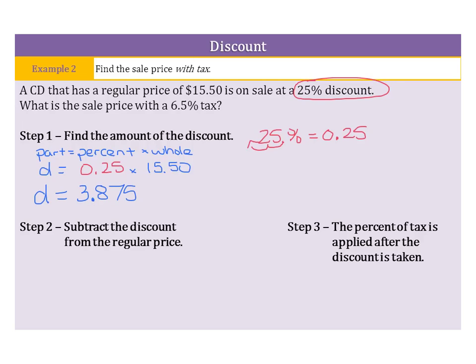Now, we want to subtract the discount from the regular price. So, our regular price was $15.50, and I'm going to need an extra 0, minus the 3.875, and go ahead and subtract. It's going to take a little bit of borrowing. 10 minus 5 is 5, 9 minus 7 is 2. More borrowing. 14 minus 8 is 6. 4 minus 3 is 1, and 1 minus 0 is 1. So, now we have 11.625. And again, try not to round until the end.